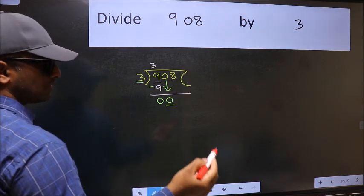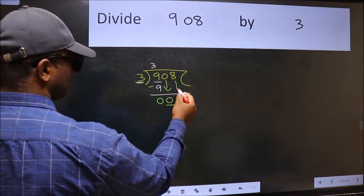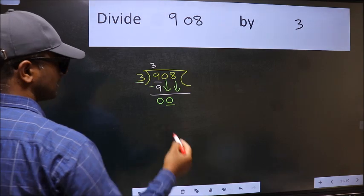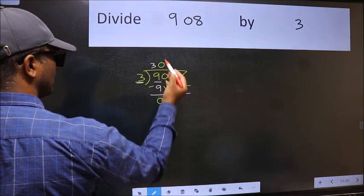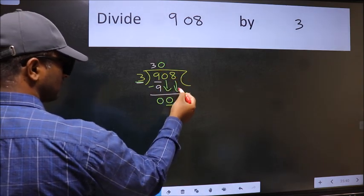So we should bring down the second number. The rule when bringing down the second number is we should put 0 here. Then only we can bring down this number.